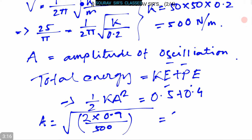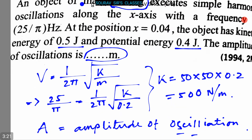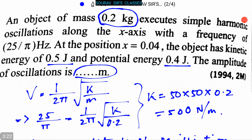This equals 0.06 m. So the amplitude of oscillation is 0.06 m, and this is our answer.